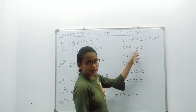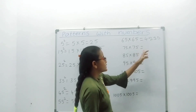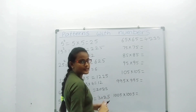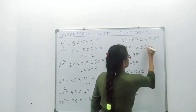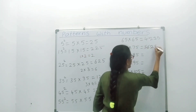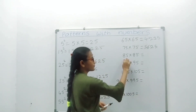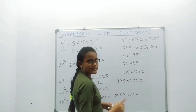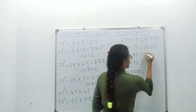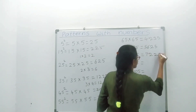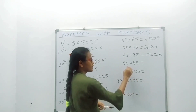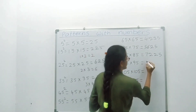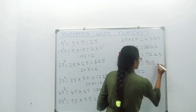75 squared: 75 into 75. Close the number 5; we have 7. The next number after 7 is 8. 7 into 8 equals 56. Write down 25 — answer is 5625. 85 squared: 85 into 85. We have 8; the next number is 9. 8 into 9 equals 72. Write down 25 — answer is 7225. 95 squared: 95 into 95. We have 9; the next number is 10. 9 into 10 equals 90. Write down 25 — answer is 9025.